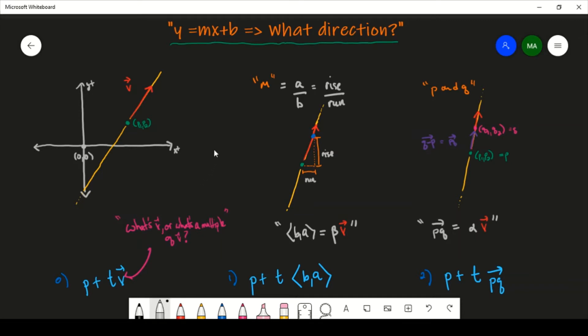And so the thing that we always said was that given some line, let's just call it L, it passes through some point P, and this thing always has some direction V. And then now to write down a vector equation for this line, we would say that it's P plus T V.